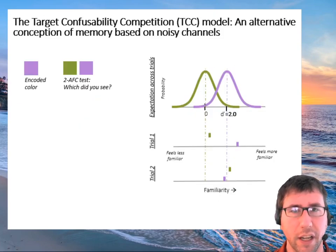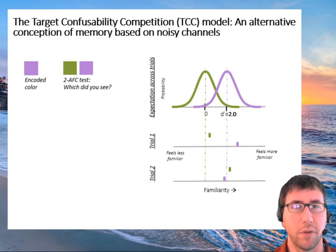Here's what it looks like. Here's a basic two-AFC memory signal detection model. So in this model, if you saw purple and then you are tested on green versus purple, your green memory strength is centered at zero, it didn't get any boost, but it varies.